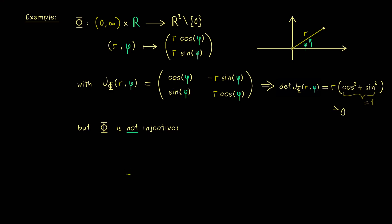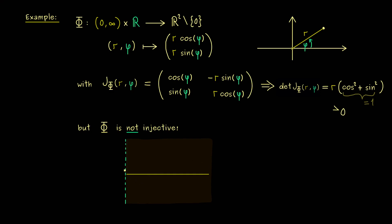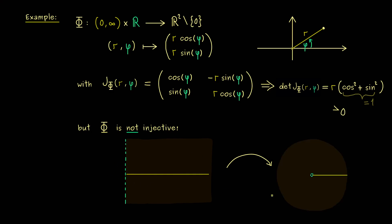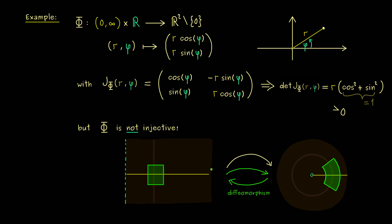Let's see what this means in the picture. The domain has the x-direction going from zero to infinity and the y-direction being the whole real line. Capital Phi maps this to R^2 without the origin — horizontal lines don't change, but every vertical line becomes a circle in the image. If we restrict the domain to a small rectangle, it's small enough that we get a small part of the disk on the right-hand side. For these two sets we have no problems with injectivity and surjectivity, so restricting Phi to them gives a nice bijective map. Since the Jacobian determinant is never zero, we get a nice diffeomorphism.